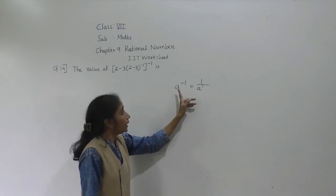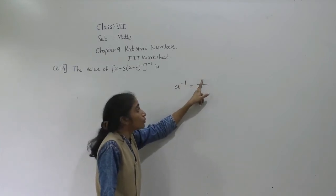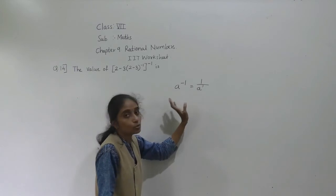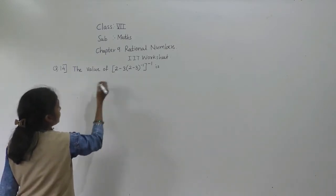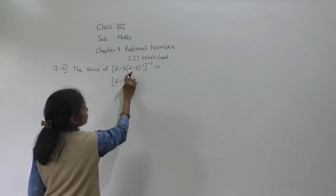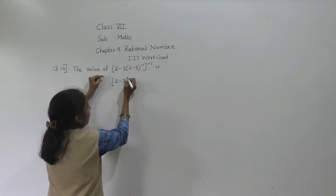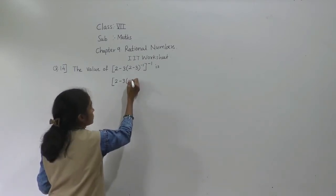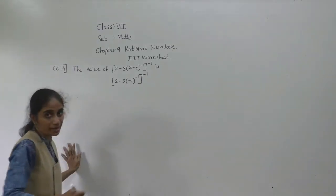In the lesson exponents and powers, these rules are covered. But since this example is given now, I am explaining it. A raised to minus 1 means: any number raised to minus 1, if you want to remove this minus 1, write 1 as numerator and that number as A raised to 1 in the denominator.